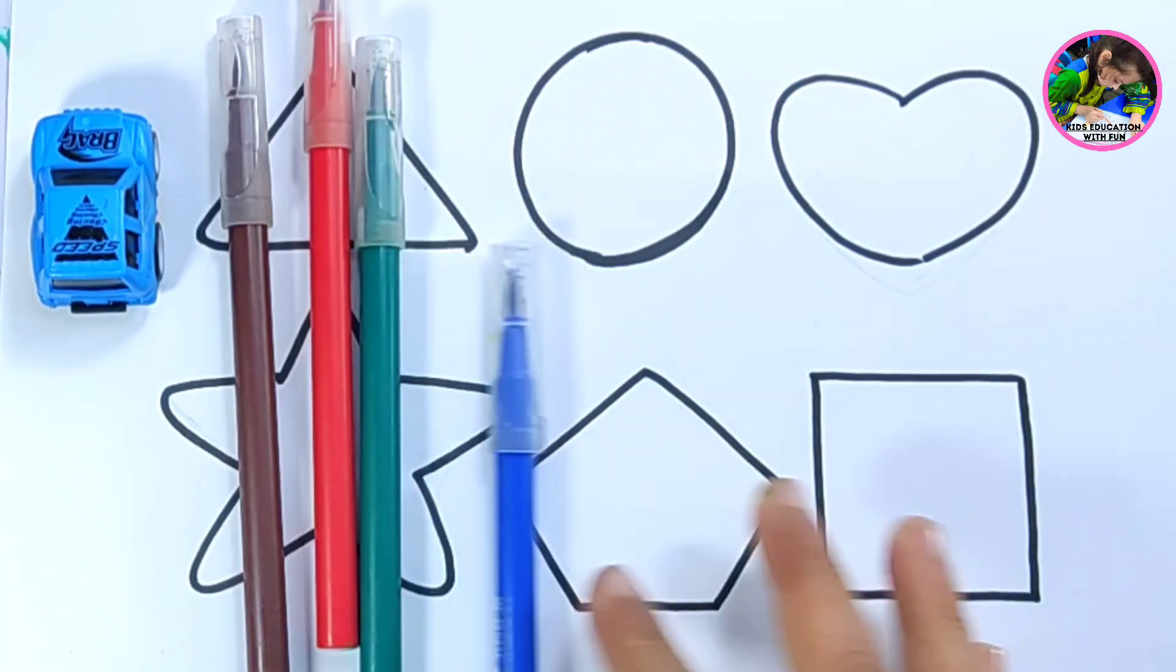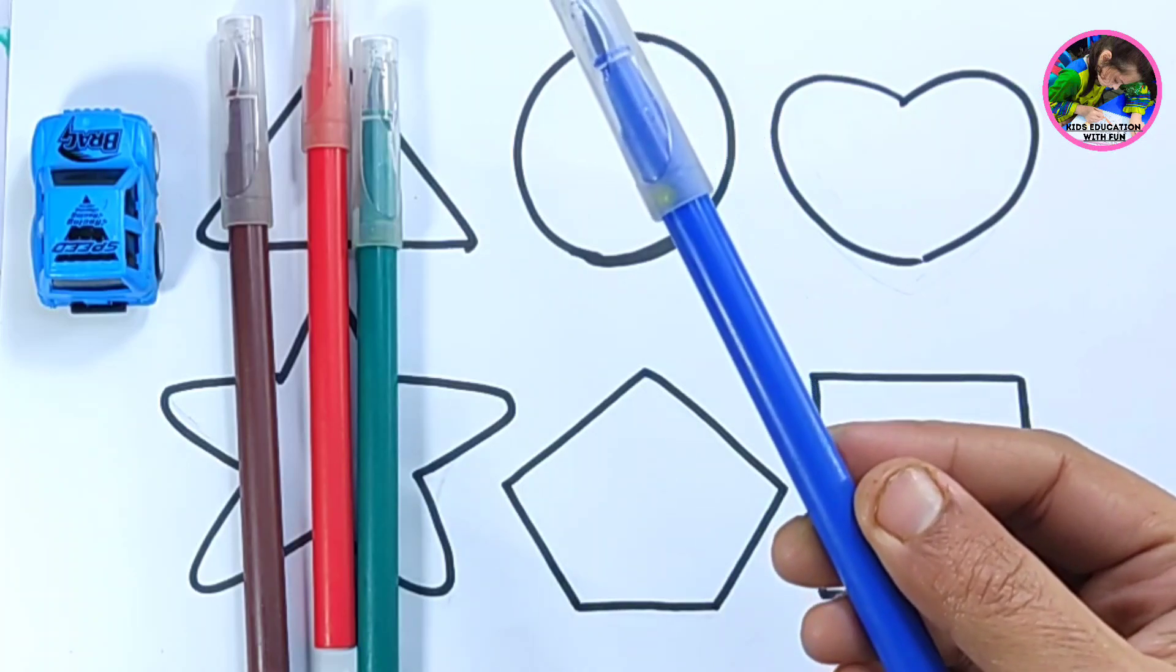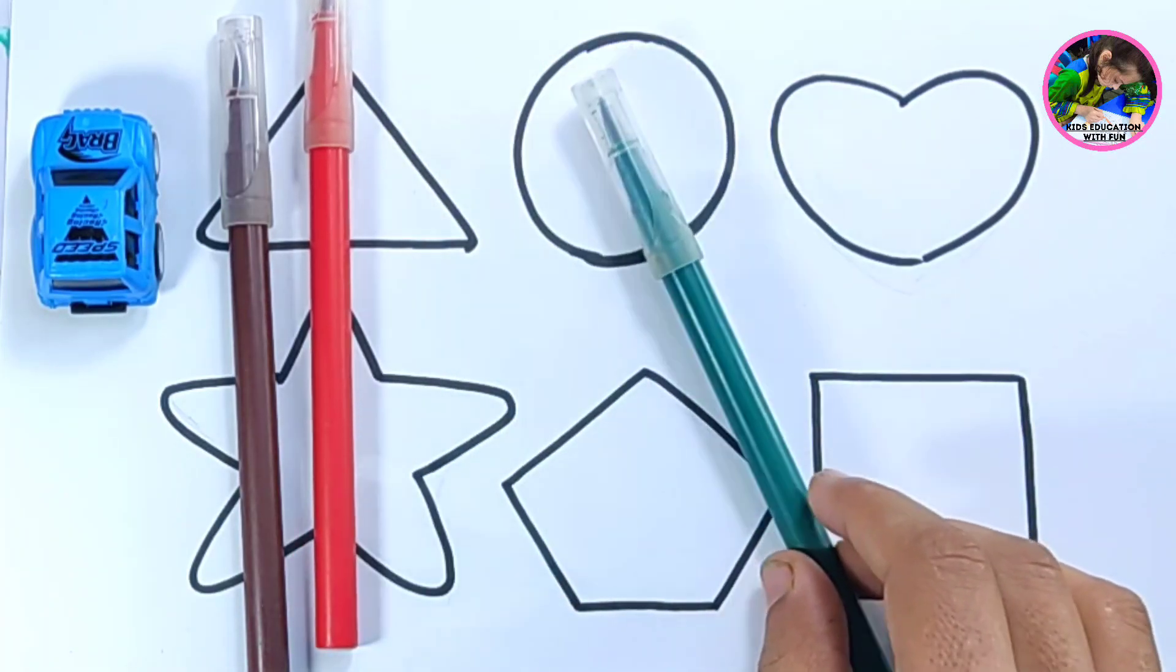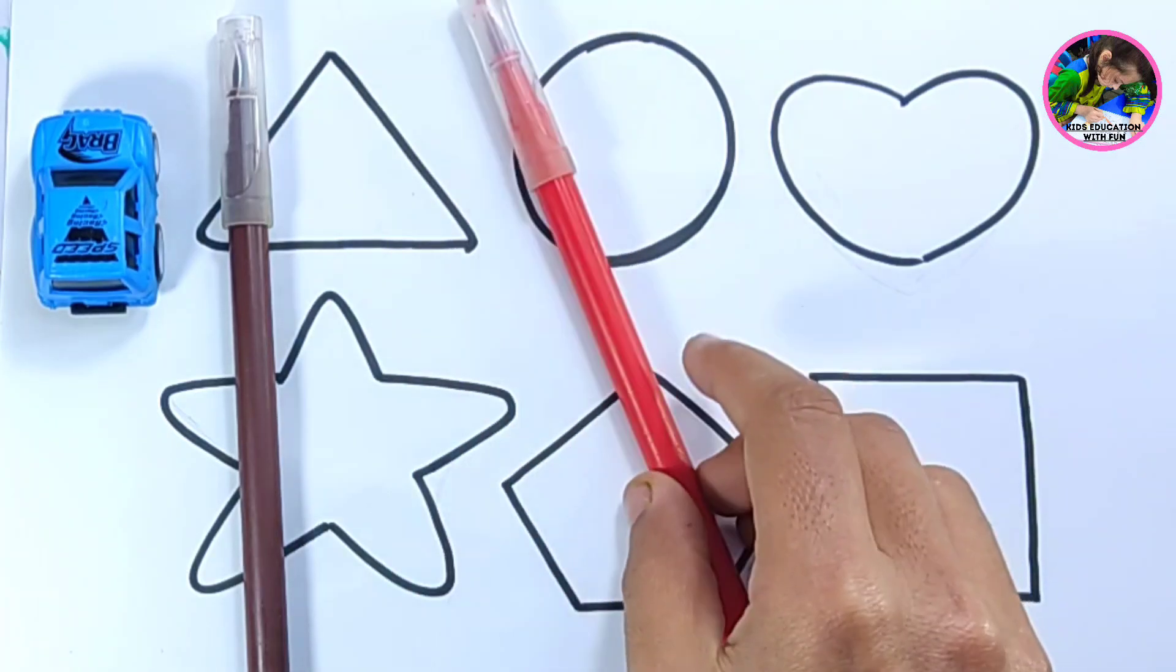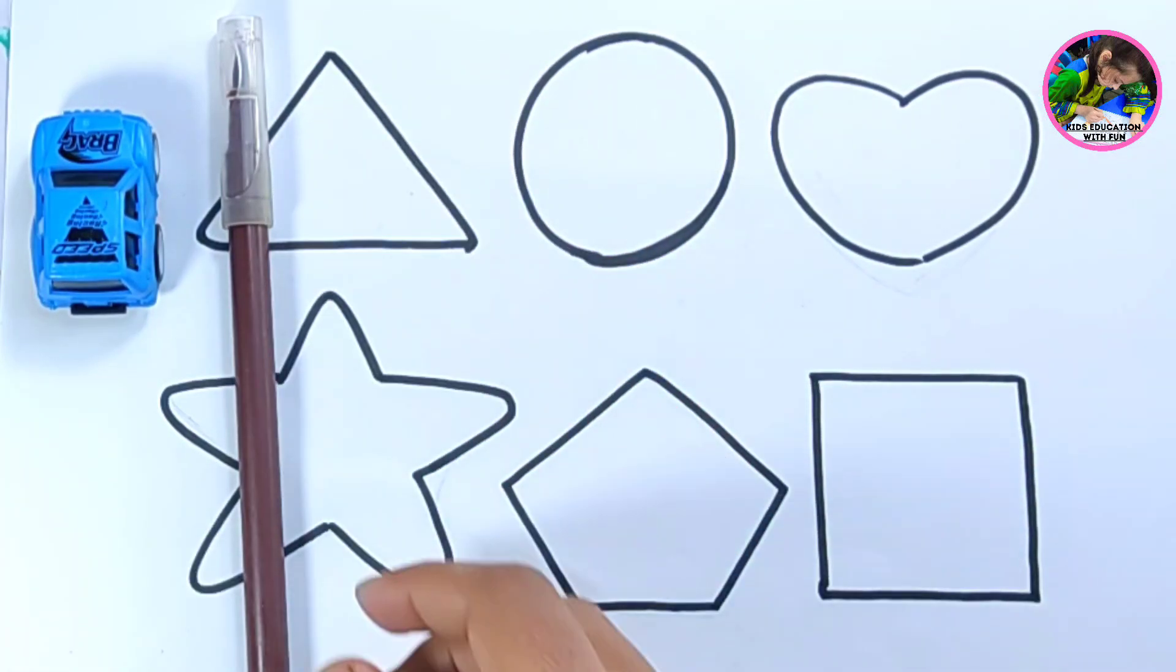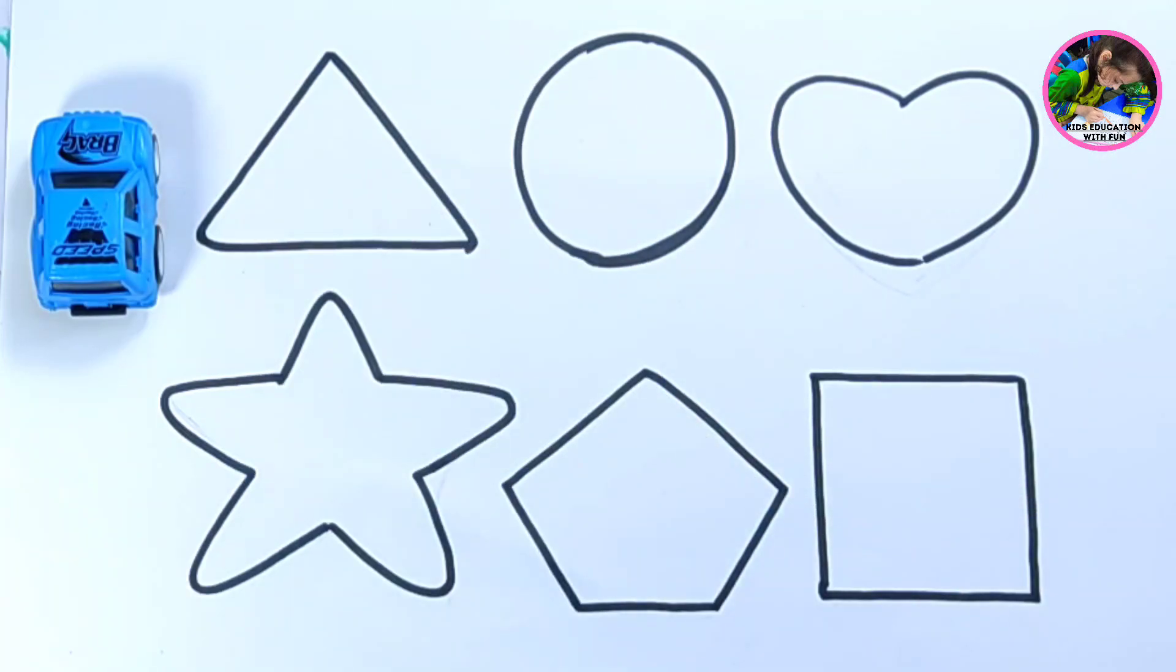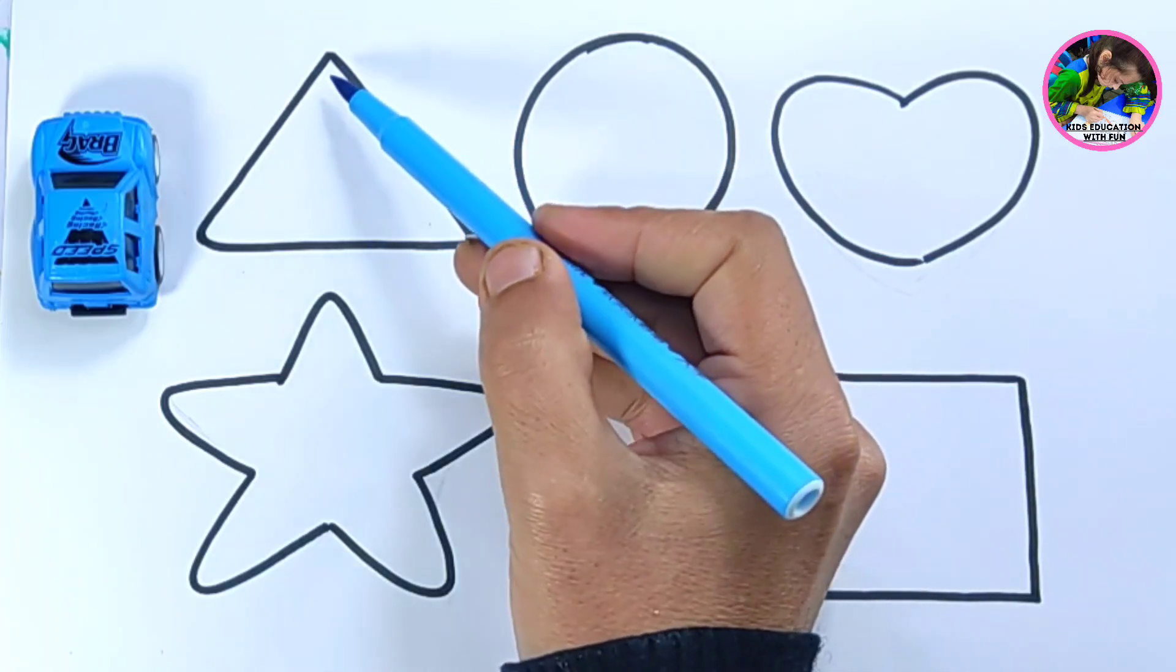Purple color, dark blue color, dark green color, red color, brown color. Let's color these 2D shapes. Sky blue color.